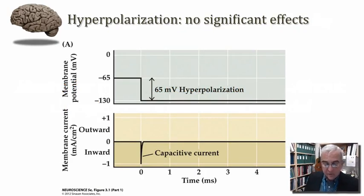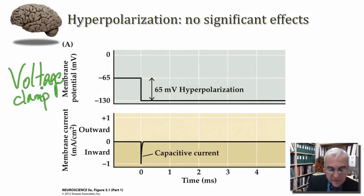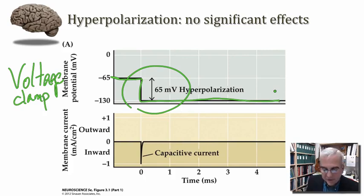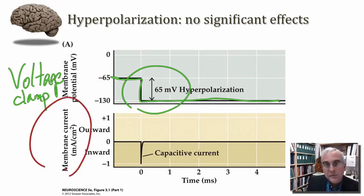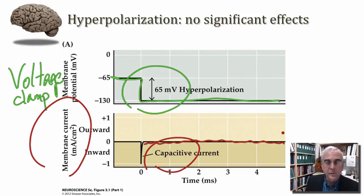In Figure 3.1 from your book is a representation of the kind of data that were available to Hodgkin and Huxley. With the voltage clamp method, they were able to set the membrane potential of the squid giant axon to any value that they wished. In this experiment, what's being done is a hyperpolarization of the axonal membrane by 65 millivolts — going from a resting value of about 65 millivolts down to about 130, then holding the membrane clamped at that potential for some period of time. What's seen is a sharp transient capacitive current, reflecting the way charge is redistributed around the membrane. But otherwise, nothing significant is happening — with hyperpolarization, there are no significant effects on net current flowing into or out of the axon.